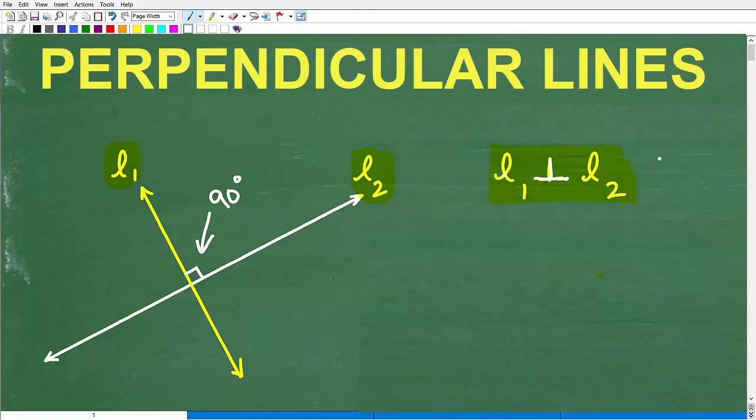As an aside, if those lines were parallel, I would use this notation. There's different ways to indicate that things are perpendicular or parallel. We're going to look at this specific problem here, to determine if one line is perpendicular to another.